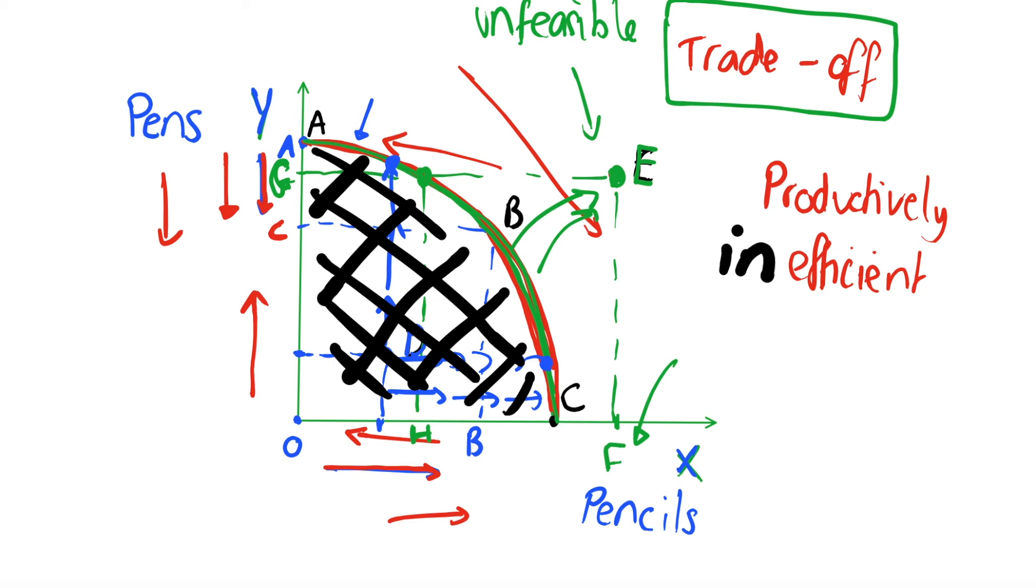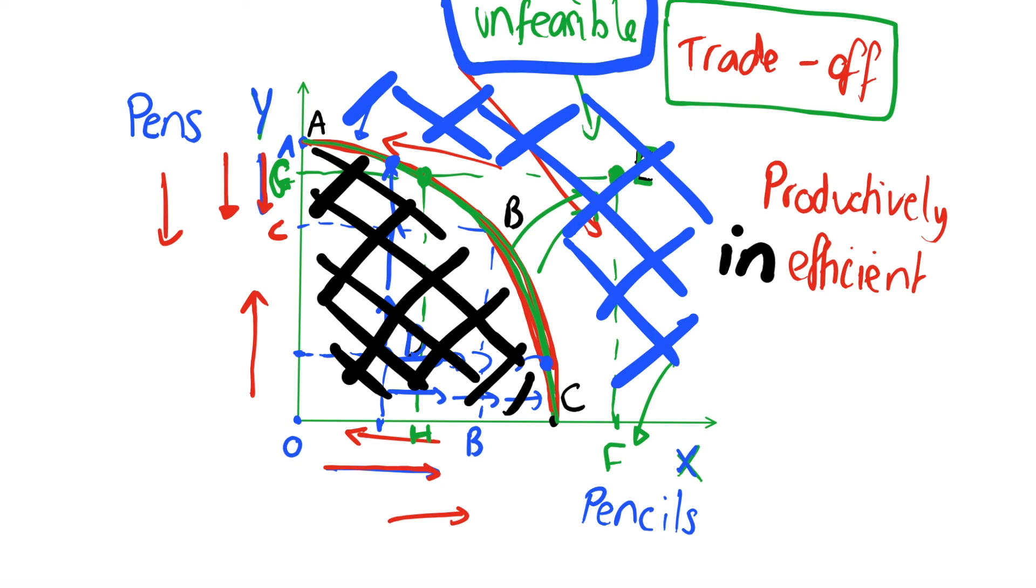So the point here is that if we are producing anywhere inside the curve, anywhere inside the curve in this black dashed area, this is going to be productively inefficient. And if we are producing in this dashed blue area outside of the curve, this is unfeasible. We can't do that. So all that is left is this curve in the middle of these two, which I'll do in red there, nice and thick. All that's left is this curve, which tells us this is the best we can do. This is productively efficient, and it is feasible. So we can do it, and it's the most efficient use of our resources. And that's what the PPF shows us.